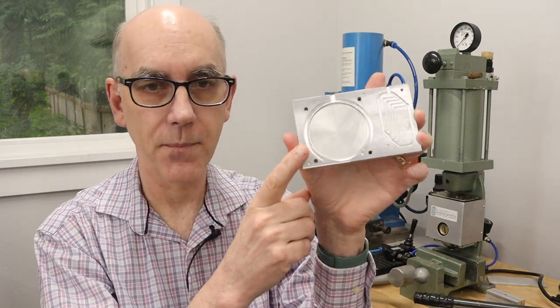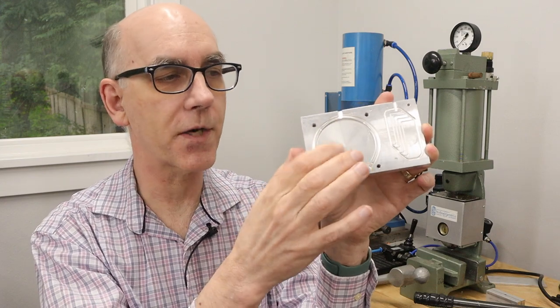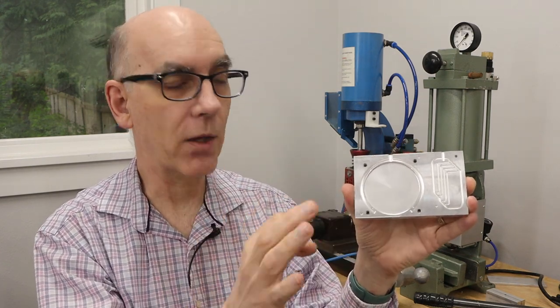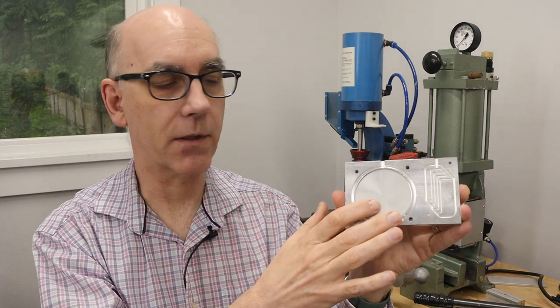Now, I have a third injection molding machine that has a larger area, so it allows larger molds. But it has the same clamping force, which is about two tons. And here's a mold that I made. This is a very large area. You'll notice that there are some screw holes here.